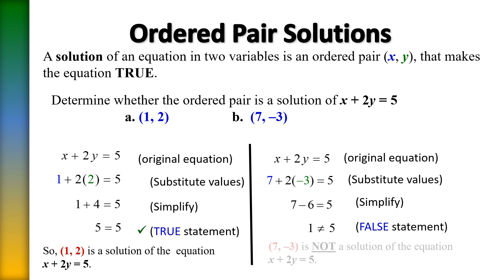When it leaves you with a false statement, that is your proof that that ordered pair of seven comma negative three is not a solution to the equation x plus 2y equals 5.